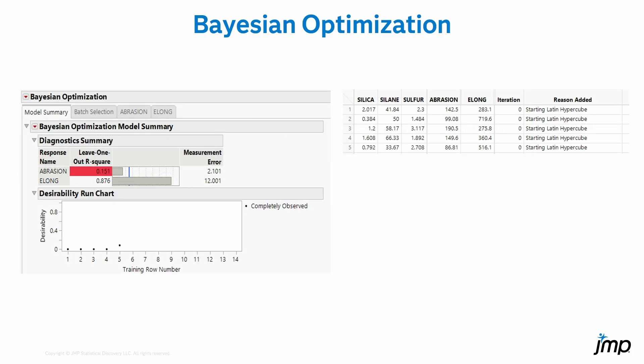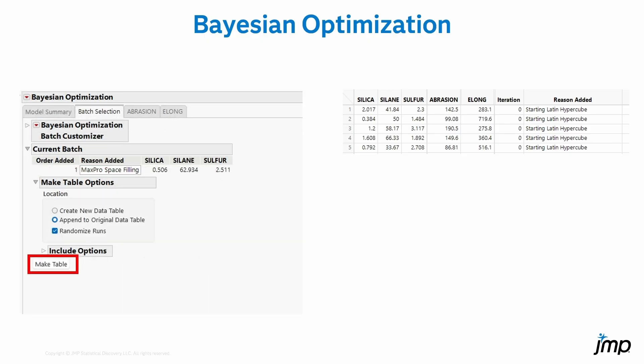Here's a simple example using a simulated version of the familiar tire tread sample data set. We want to maximize the abrasion response while matching a target on the ELONG one, by adjusting three input variables. The original data has 20 runs, but here we will start with just five runs from a Latin hypercube design. We bring up the platform and we see that the abrasion response is fitting poorly. We also see a run chart of the observed desirability scores — they are all near zero, so none of these starting runs are anywhere close to solving our problem. The platform automatically recommends a space-filling run to improve the model fit.